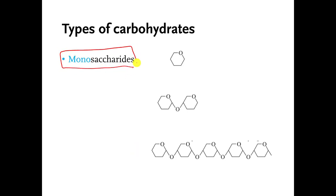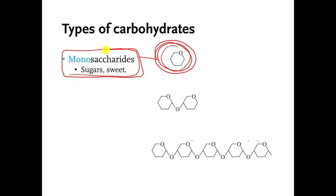The simplest carbohydrates are called monosaccharides, and this is going to be my cartoon for a generic monosaccharide. Mono means one. Saccharide means sugar. Monosaccharides are usually referred to as sugars, and they have a tendency to taste sweet.